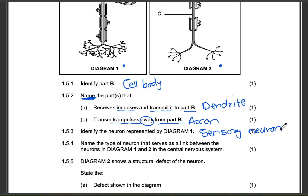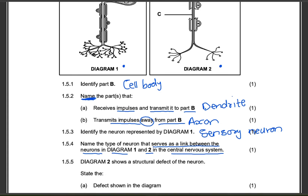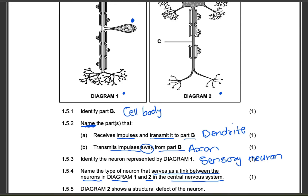Question 15.4: name the type of neuron that serves as a link between the neurons in diagram one and two in the central nervous system. Diagram one we've identified as the sensory neuron. Diagram two will obviously be the motor neuron. The neuron that is a link between the two is obviously the interneuron, or connector neuron.